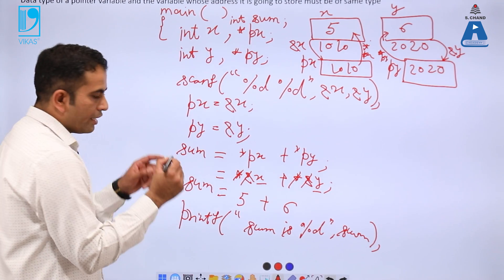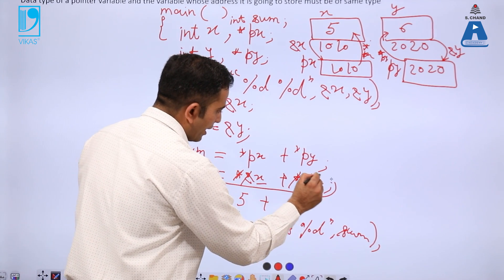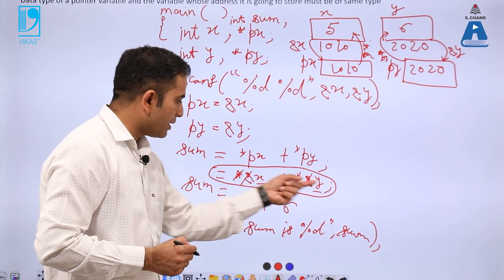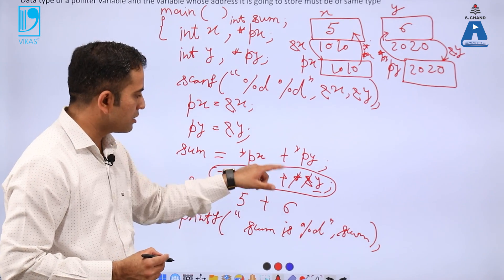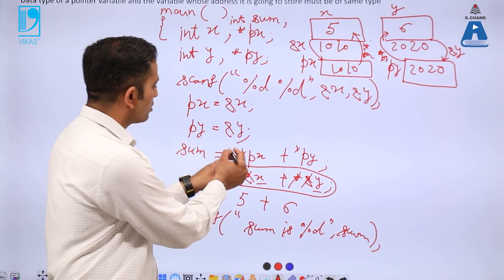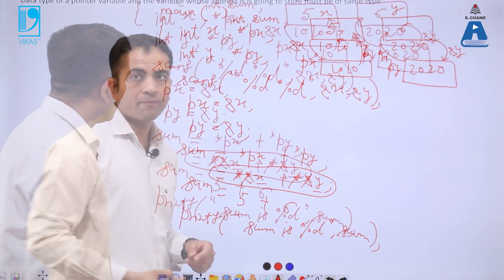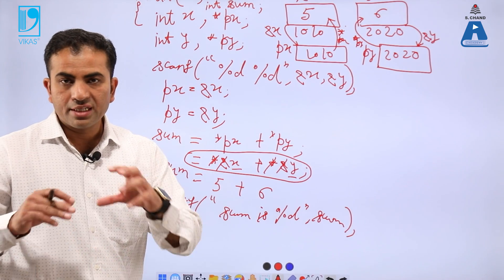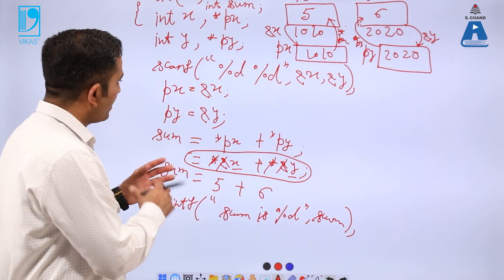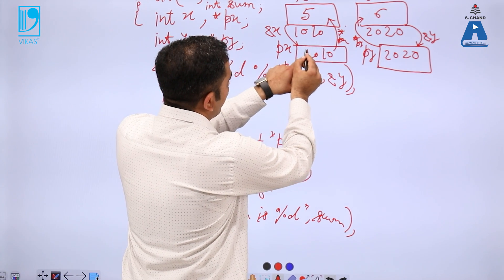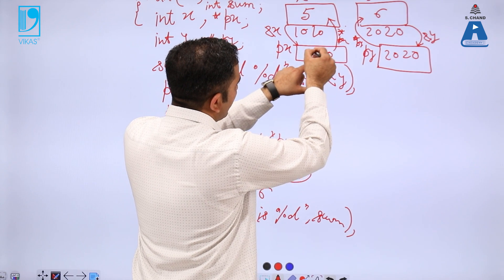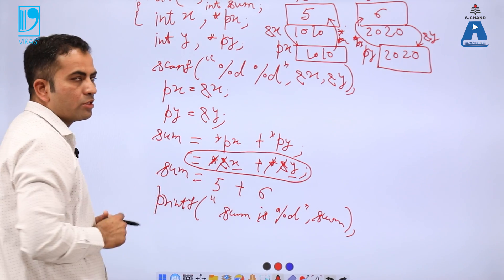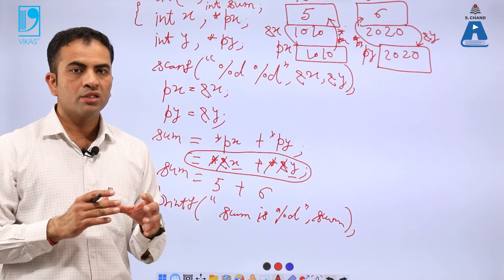Note: the intermediate statement written as *&x + *&y was written only to help understand the concept of *px and *py. Do not implement that statement while writing or executing the program. Dereferencing means it is referred to the value of the variable to which the pointer points. *px dereferences the address, and the value at that address is used. This is all about pointer arithmetic.